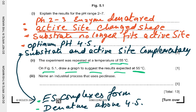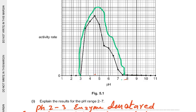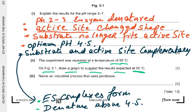The experiment was repeated at 55 degrees Celsius — a higher temperature. The optimum pH remains the same at 4.5, but the activity rate would be higher because more temperature means more kinetic energy, so more enzyme-substrate complexes are formed. The graph should show a smooth curve higher than the original but with the same optimum pH of 4.5. Part 3: name an industrial process using pectinase — fruit juice production, where it breaks down the cell wall of fruit pulp so more juice is released.